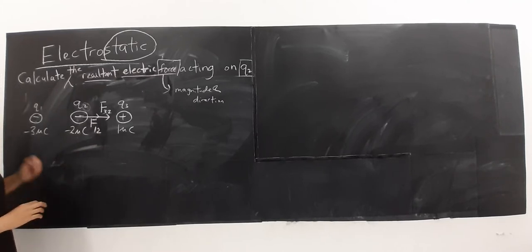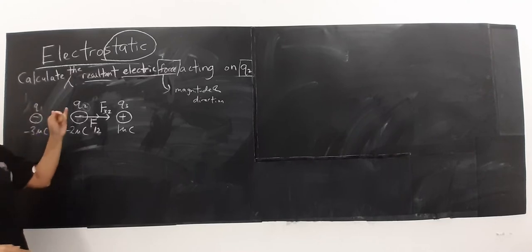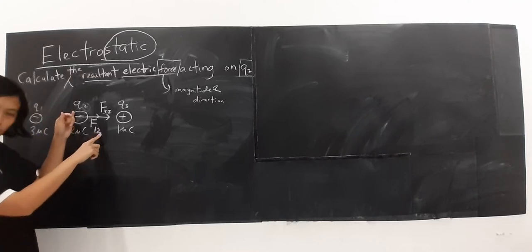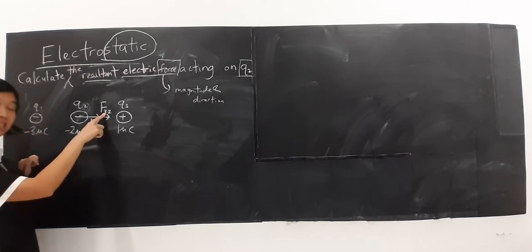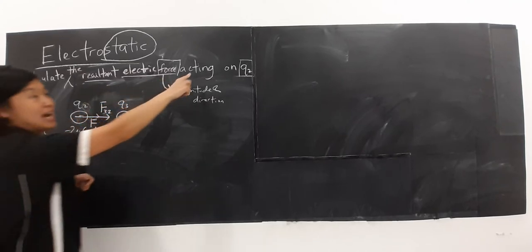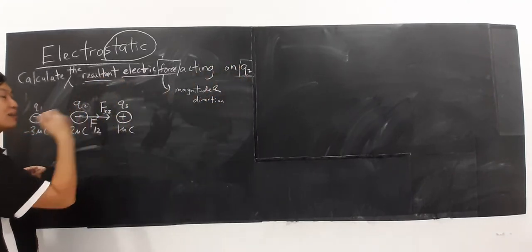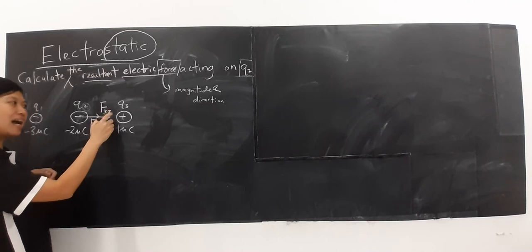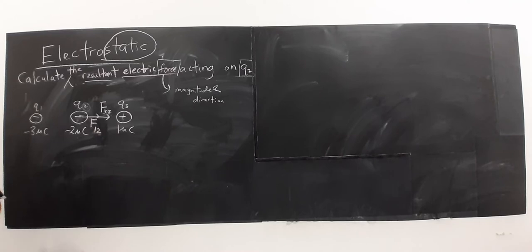Maksudnya dekat sini, contohnya F1,2 ini. F1,2 maksudnya force dari Q1 ke atas Q2. So I have F1,2. Ini adalah force dari Q3 ke atas Q2. Saya kena buat ini secara konsisten.